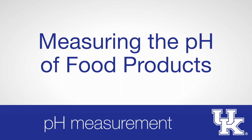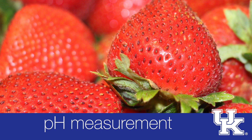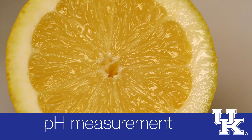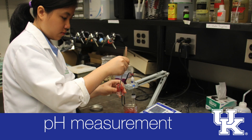pH measurement. Food is a complex network of biological and chemical ingredients. The unstable interactions between these ingredients make it challenging to get the best estimate when measurements are made. Since pH influences food safety and quality, it is important for consumer health and acceptability to ensure such measurements are the best possible estimates.